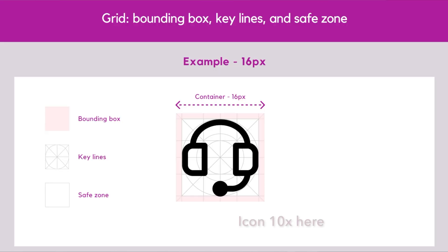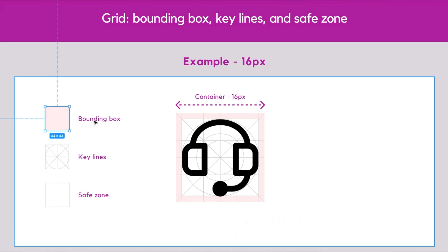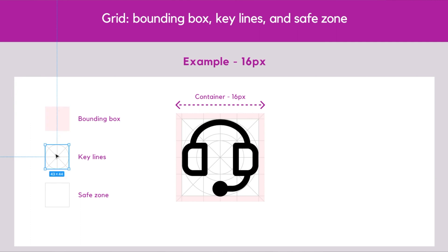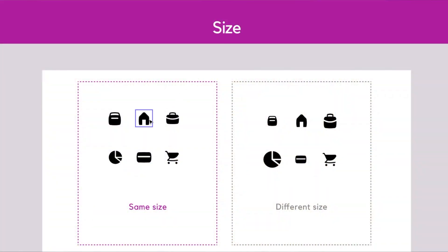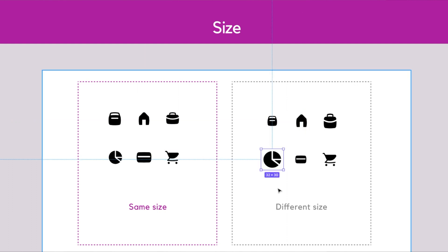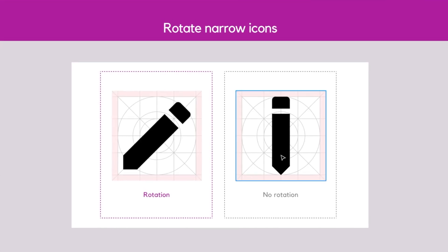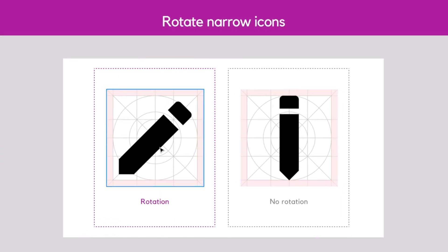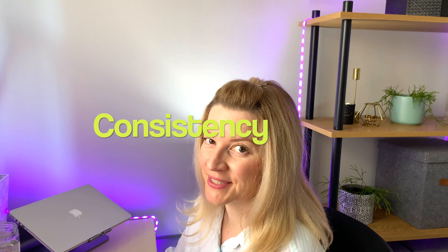Great icons are made using grids. First, you need to define your bounding box, define a safe zone within it, and set a few key lines. Use the grid as a template to keep your icons proportionally uniform. Don't mix sizes — stick to the same size, for example 24 pixels or 16 pixels. Also, if an icon is narrow, don't be afraid to rotate it so it fills the container, and try to use the whole container — your icon will look more balanced that way.